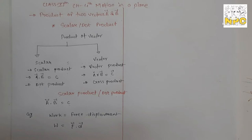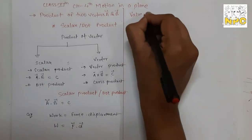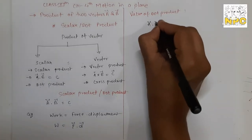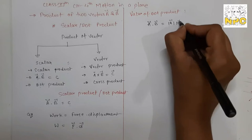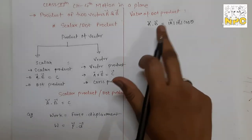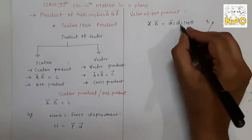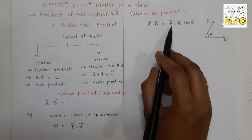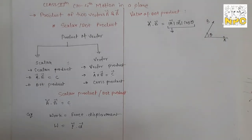If you have two vectors and you take their dot product, what is the value? The value of the dot product is: vector a dot vector b equals the magnitude of a (mod of a) times the magnitude of b (mod of b) times cos theta, where theta is the angle between vector a and vector b. This gives only a magnitude — a scalar value.